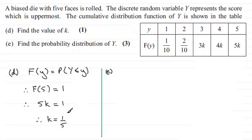To work out the probability distribution of Y, I'm going to draw up a table of the probabilities for our observed value Y. Y has the values 1, 2, 3, 4, and 5.